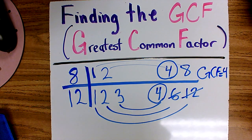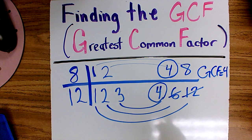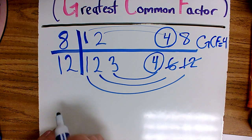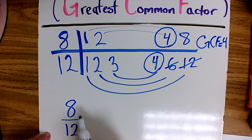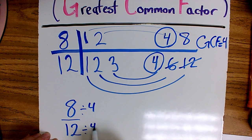I'm going to use that 4 because now I know that both 8 and 12 can be divided by that number. So I'm going to go ahead and divide the top and bottom by 4 to get my new reduced fraction.